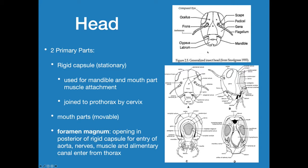In the head itself, you have the ocelli — remember, those are the simple eyes — and then the compound eyes. Antennae are sensory organs used primarily for sensing the environment around them, and we use them in many insects as part of the identification process. The head itself is a very rigid capsule — it's stationary. The mouth parts and mandible are attached by muscle internally and they are joined to what's called the prothorax through the cervix. The mouth parts will be movable, and that muscle attachment is what allows that.